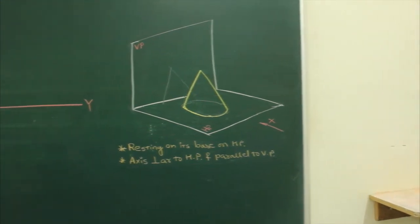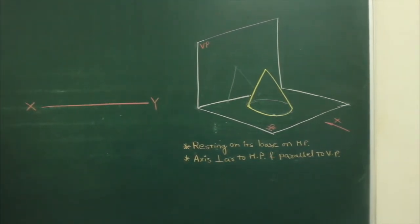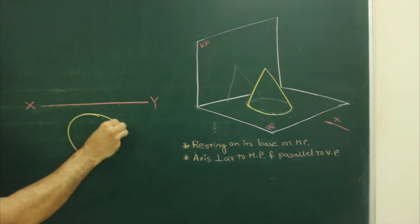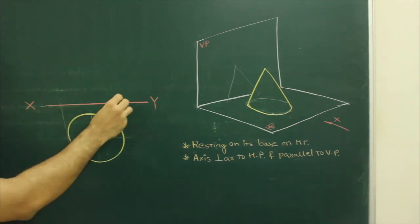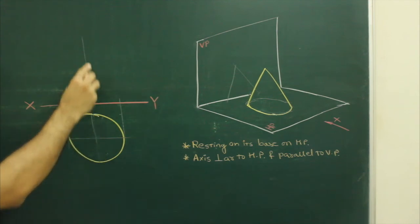So what we will do? In top view, we will draw a circle of diameter 16 and we will take the extreme edge. We will take the height from here.